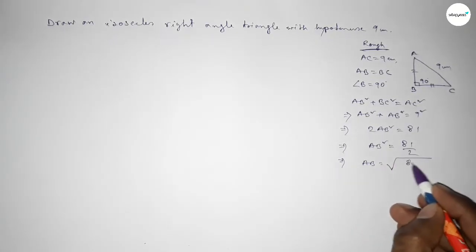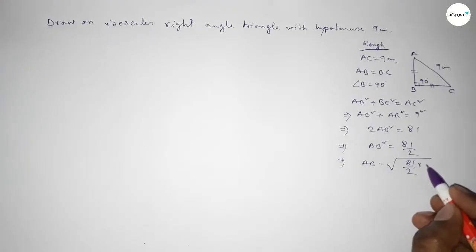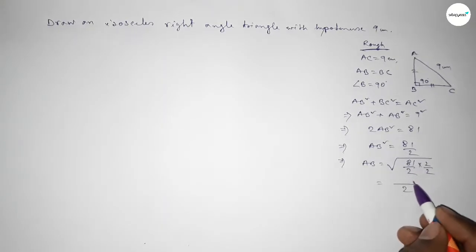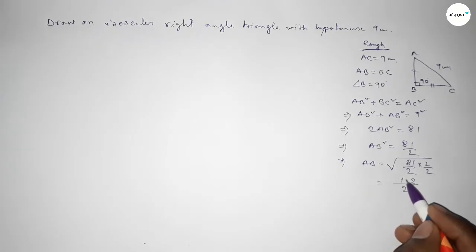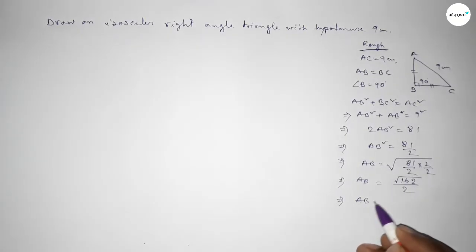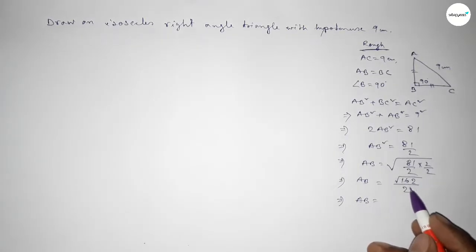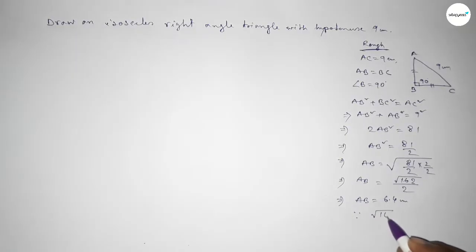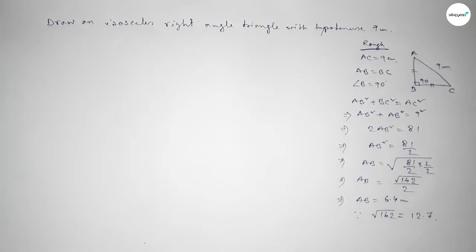So AB equals root over 81 over 2. To remove the square root from 2, multiply numerator and denominator by root 2, giving root 162 over 2. Therefore AB is approximately 6.4 centimeters, since the value of root 162 is approximately 12.7.